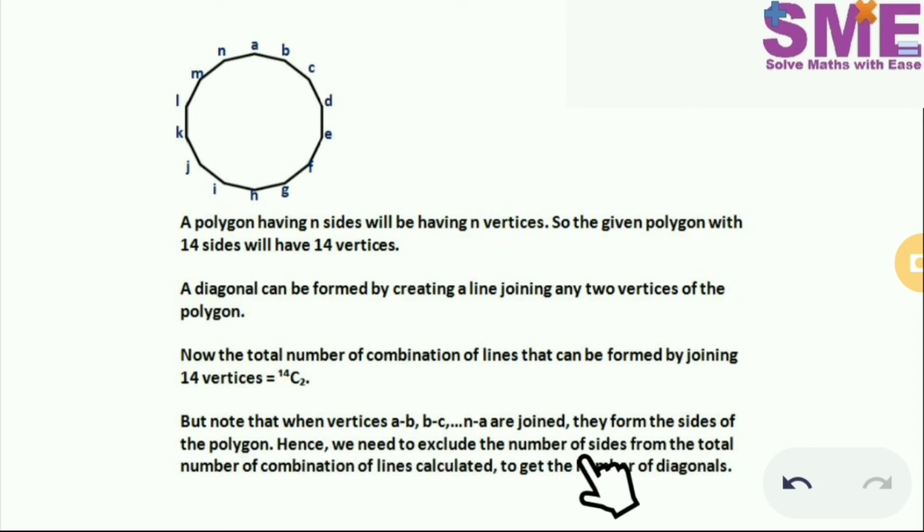Hence, we need to exclude the number of sides from the total number of combinations of lines calculated, which is 14C2, to get the total number of diagonals.